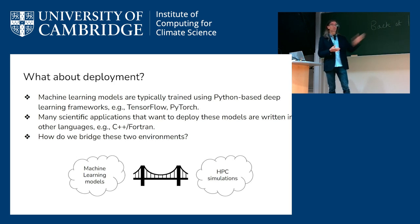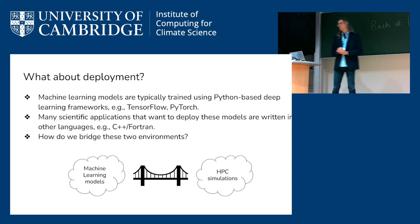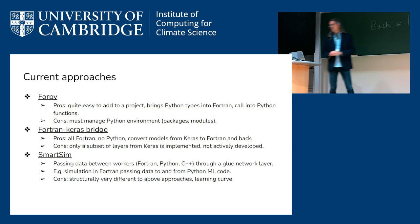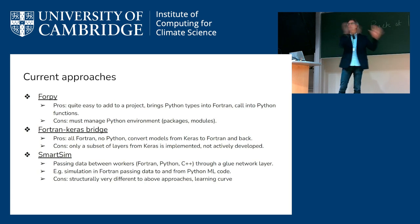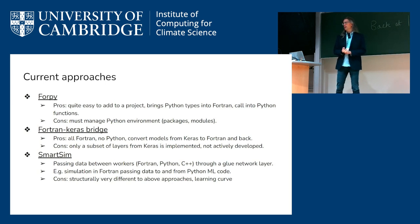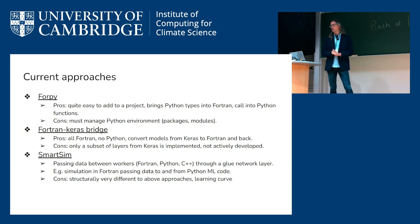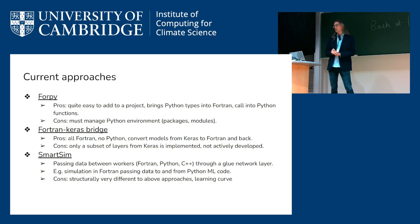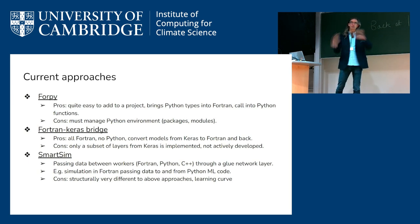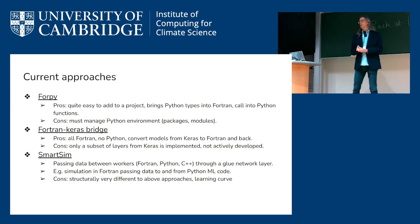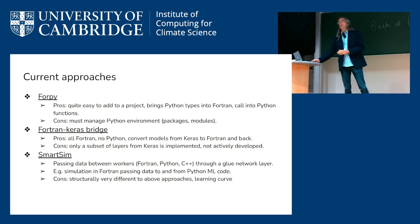So how do we bridge these two environments? A popular and common approach is ForPy — now just talking about Fortran, not C++. ForPy is quite common and has advantages: it's very simple, you just take a file and drop it into your application. You can bring Python types into Fortran and call Python functions from Fortran. But the disadvantage is you've basically brought the entire Python interpreter into your application, and that has a certain overhead.